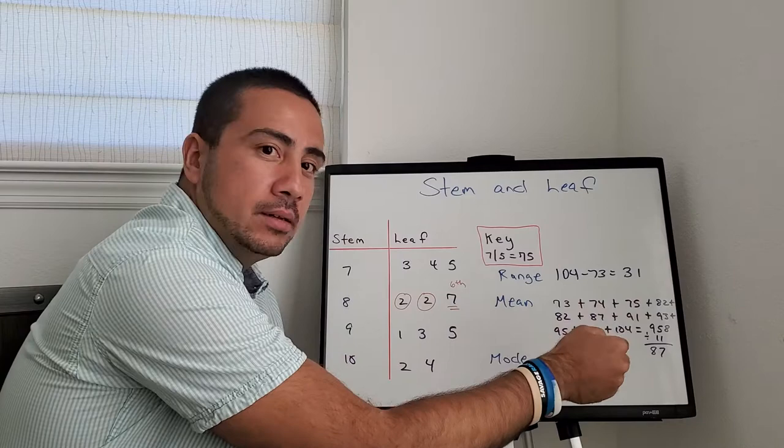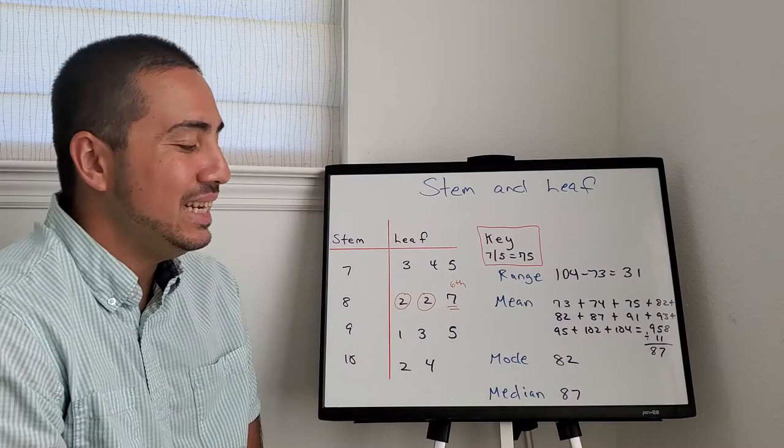Mean, what mean is you're going to add them all up, all the numbers up. And in this case, you have 11 numbers. So you divide by 11, mean of 87.